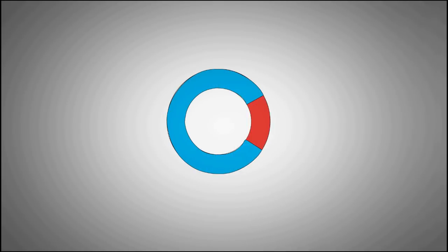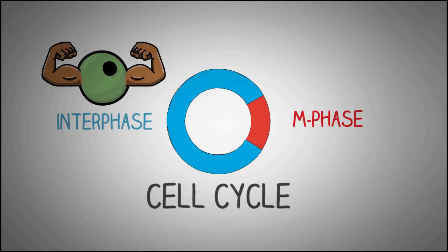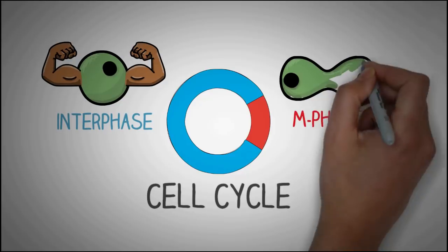Now as you know the cell cycle is divided into two main phases, the interphase or the M phase. Interphase is a time during which the cell grows and prepares for division. And during the M phase, the cell actually splits into two.